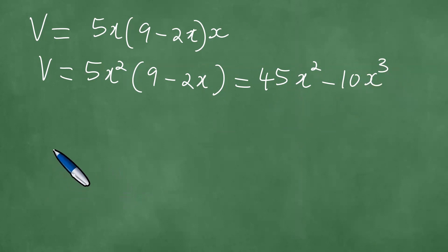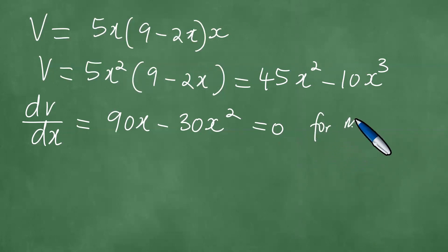Taking the derivative dV/dx, we get 90x minus 30x², and this equals 0 for maximum volume.